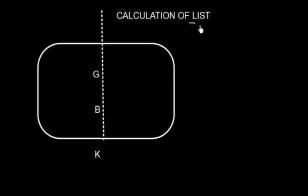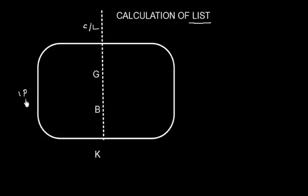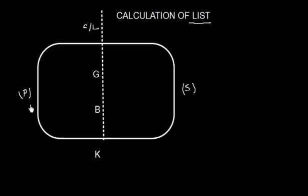How to calculate the list? The center of gravity is at the center line. We are looking at the ship in the transverse direction, meaning in port and starboard direction. If we look at the ship from aft, this side will be my starboard side and this side will be my port side.